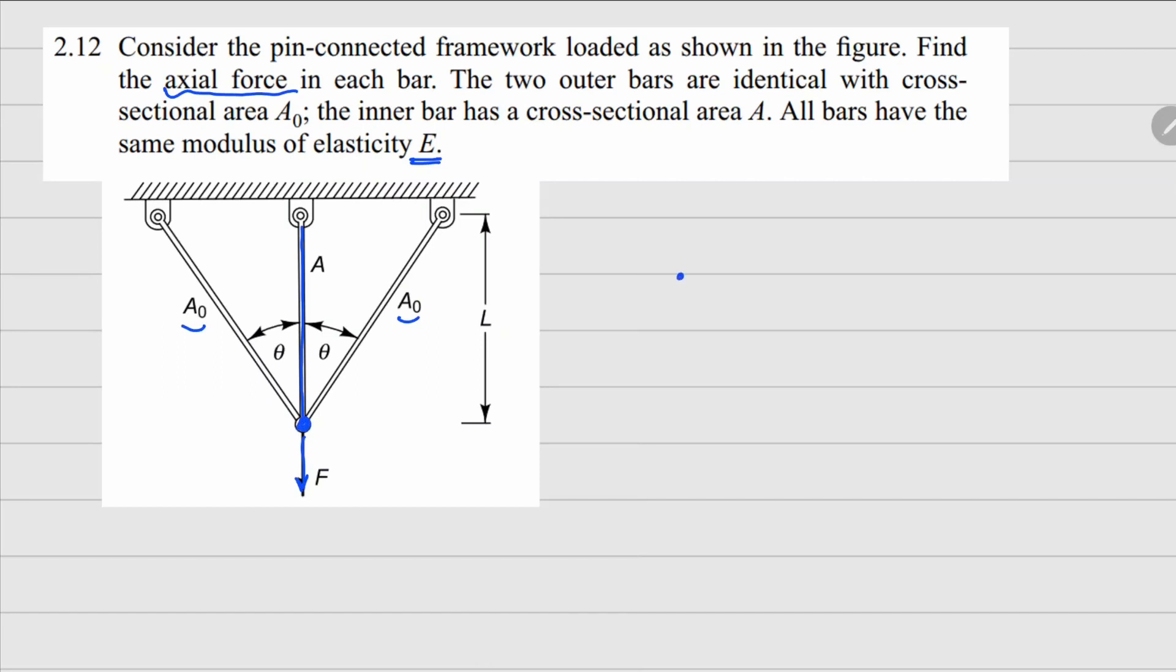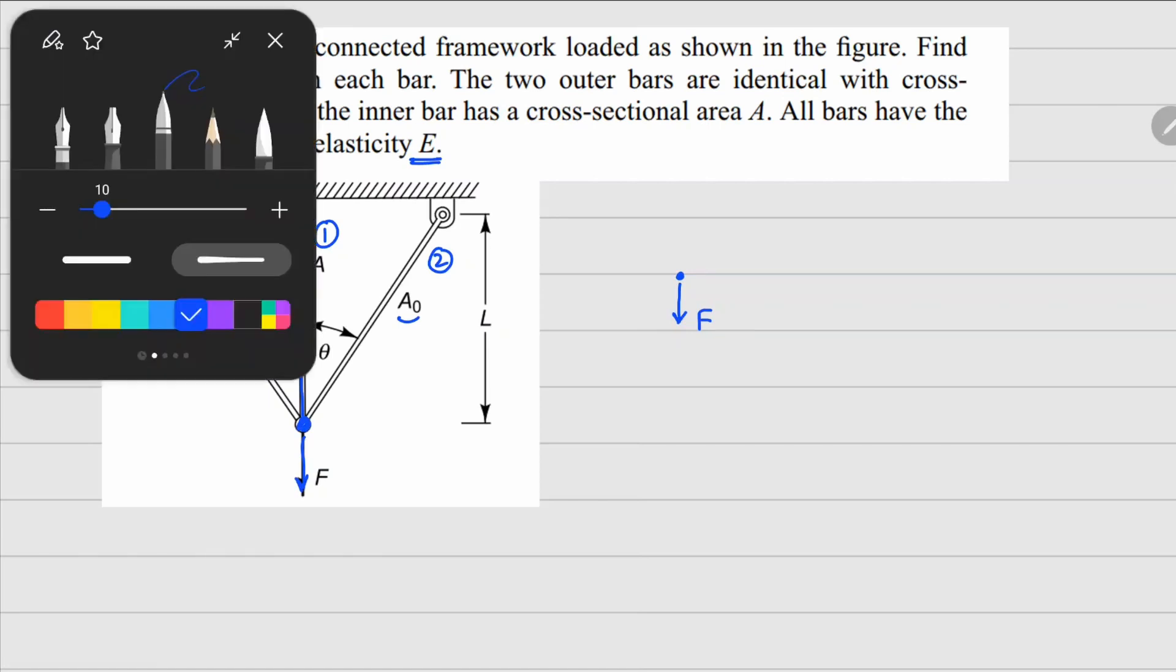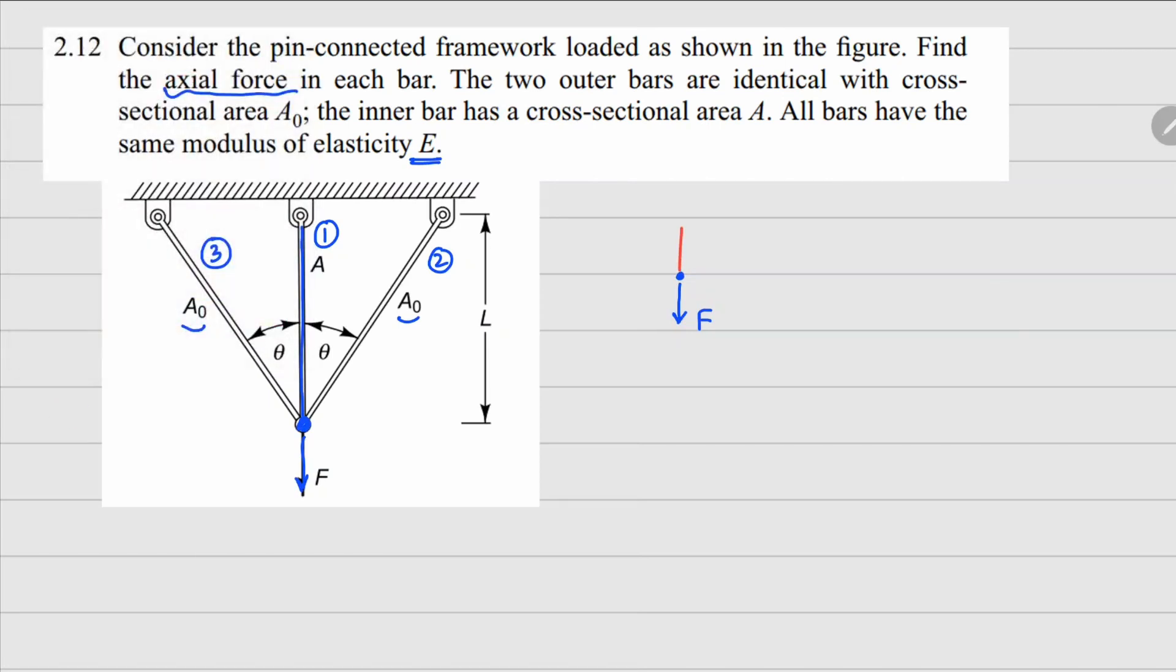So I go to this joint at the bottom here. Let's name these members - maybe this one is first, second, and third. If I draw the free body diagram here, we are going to have F1 going this way, F2 going here, and F3 this side, and this angle right here is theta from both sides.